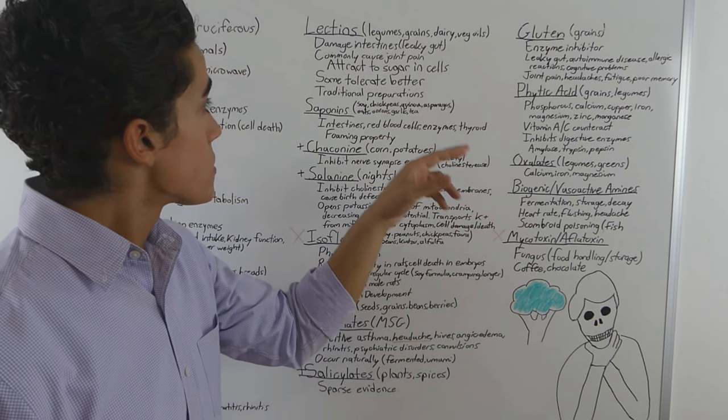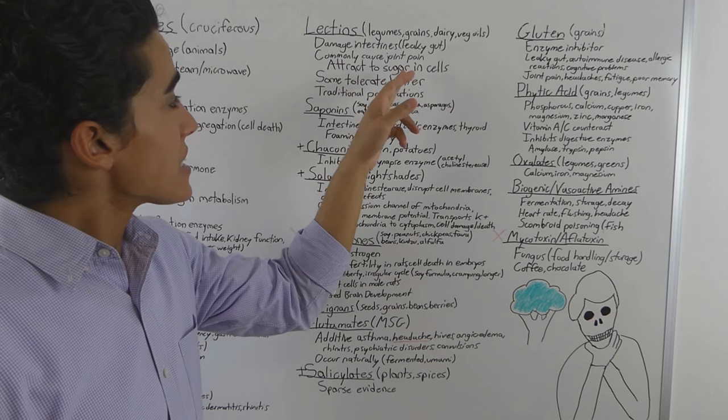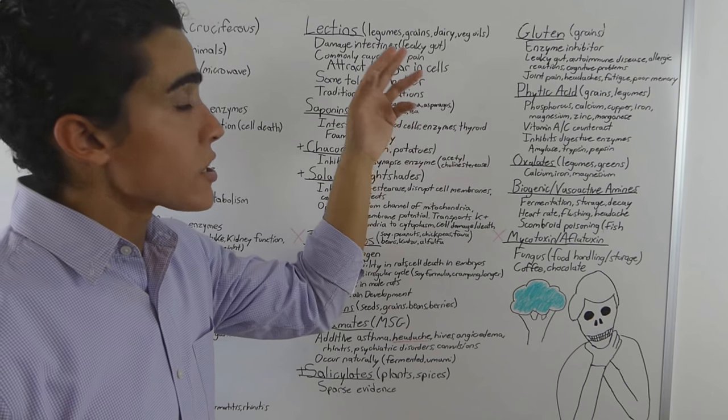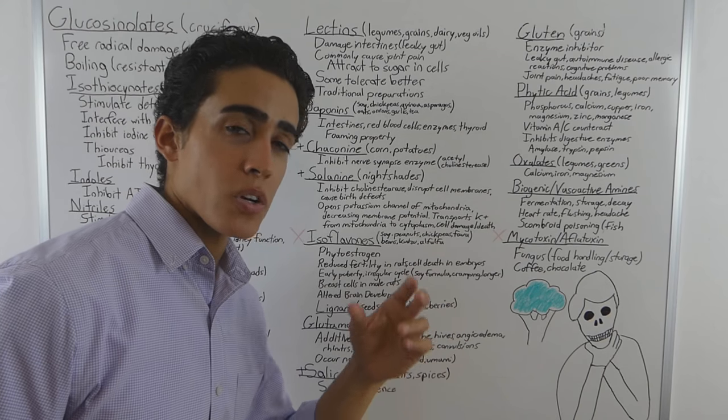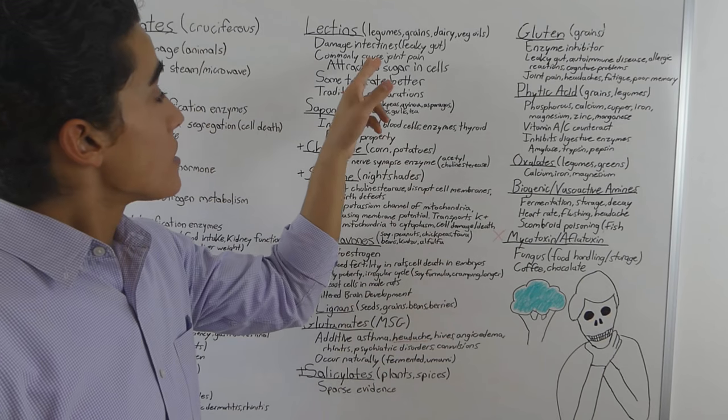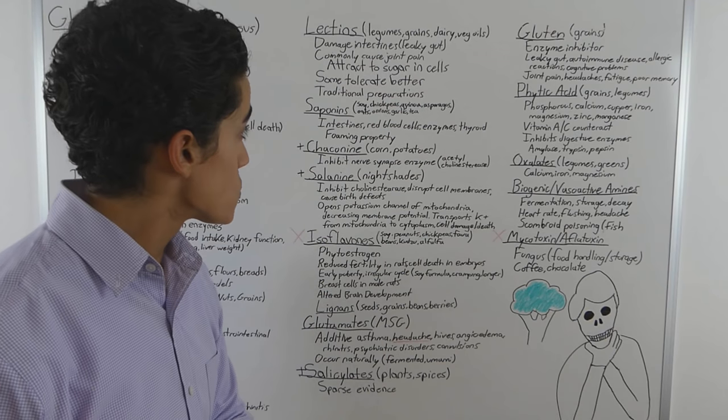dairy, and vegetable oils. They damage the intestines because they're attracted to the sugar in the cell. And that pretty much causes cell damage and in some cases cell death. They commonly cause joint pain as well.